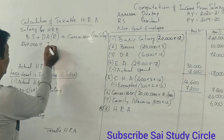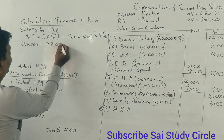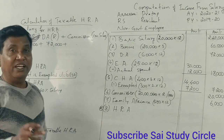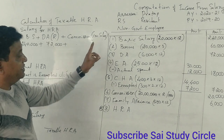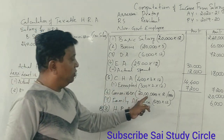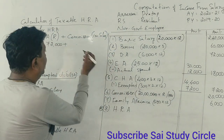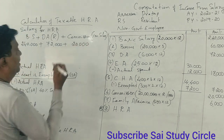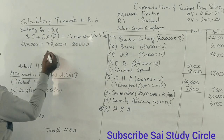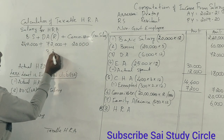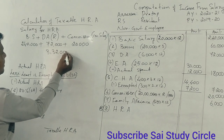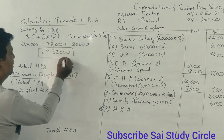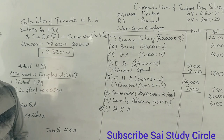Including DA of Rs. 72,000, and commission percentage on sales, the total salary for HRA purposes comes to Rs. 3,32,000. This is the salary figure used for HRA exemption calculation.